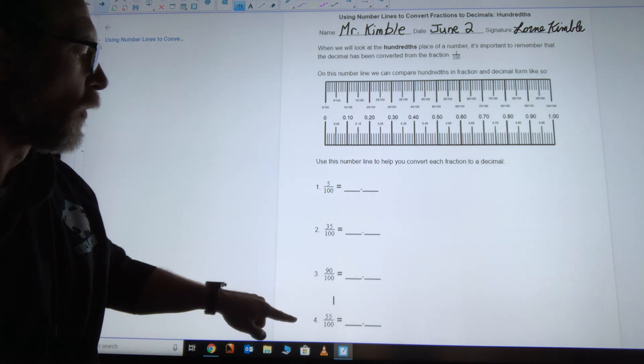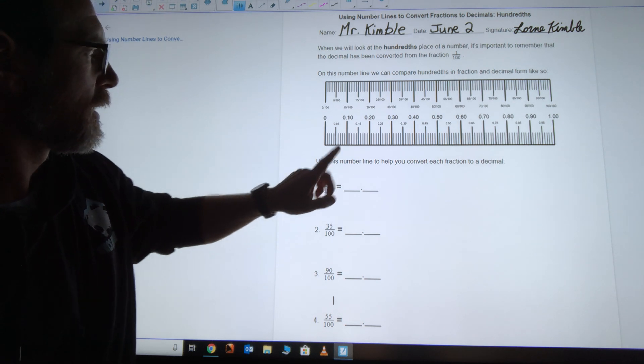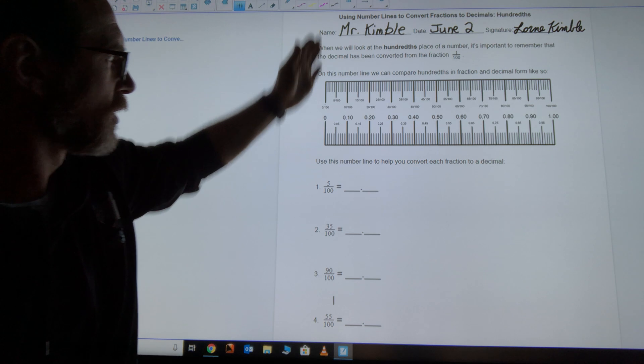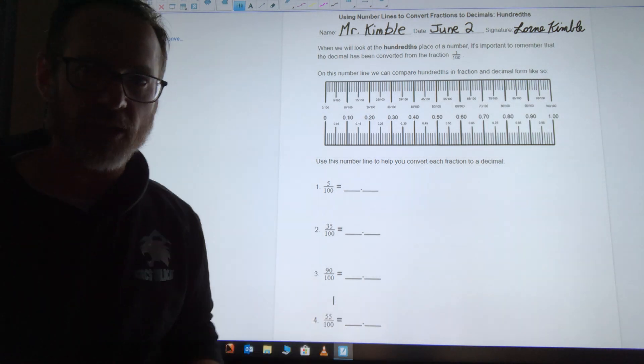For the first four, you can look straight from the fraction form and look straight down, and you'll see the decimal form.